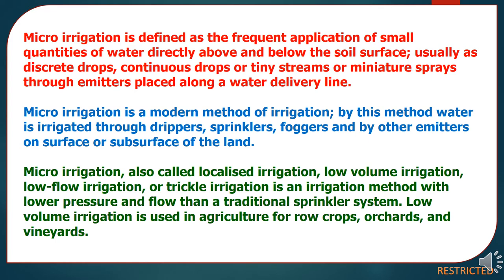Micro-Irrigation is defined as the frequent application of small quantities of water directly above and below the soil surface, usually as discrete drops, continuous drops, tiny streams, or miniature sprays through emitters placed along a water delivery line. Micro-Irrigation is a modern method of irrigation. By this method, water is irrigated through drippers, sprinklers, foggers, and other emitters on the surface or sub-surface of the land. Micro-Irrigation is also called Localized Irrigation, Low-Volume Irrigation, Low-Flow Irrigation, or Trickle Irrigation — an irrigation method with lower pressure and flow than a traditional sprinkler system.